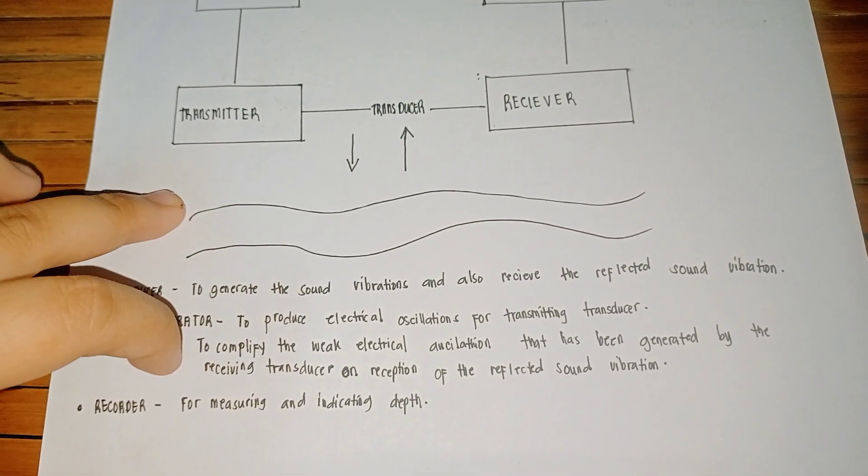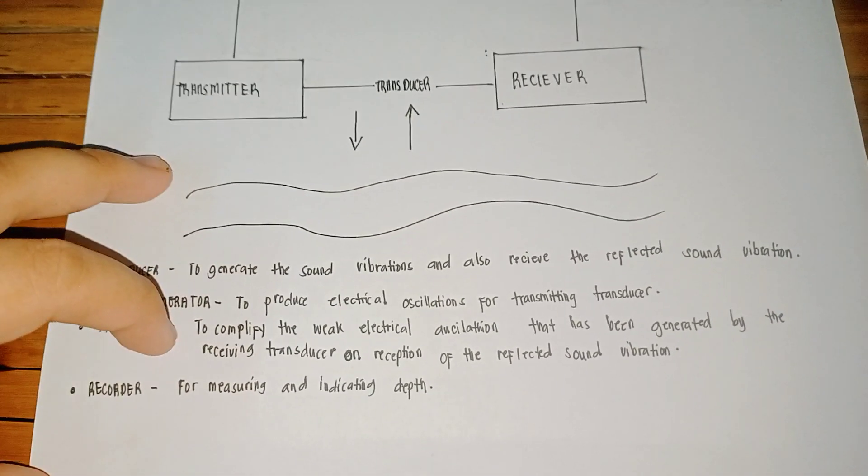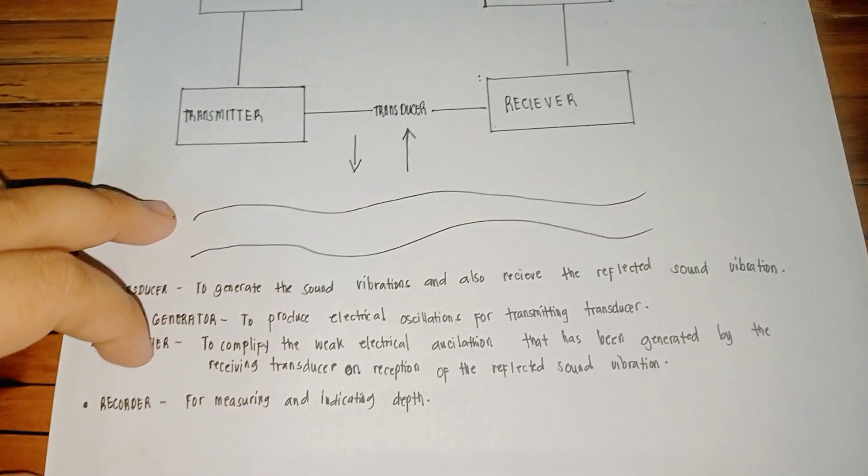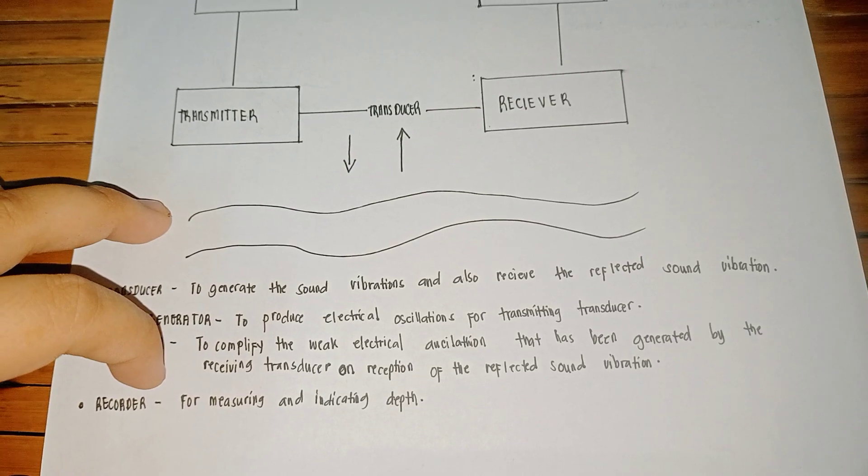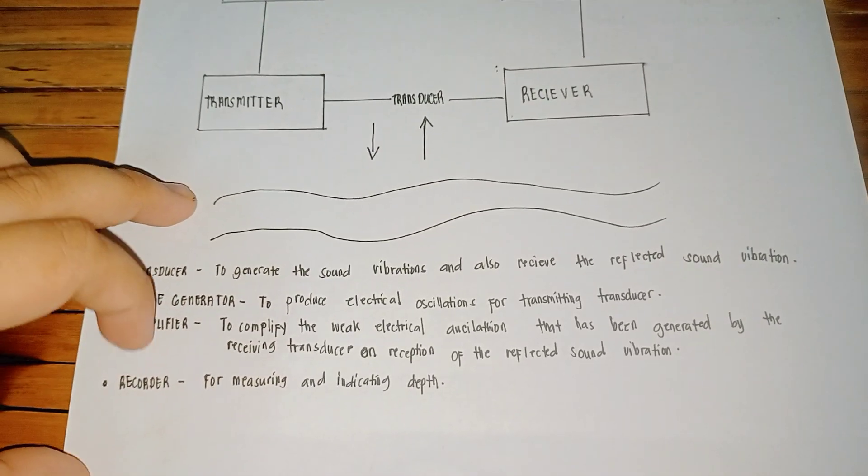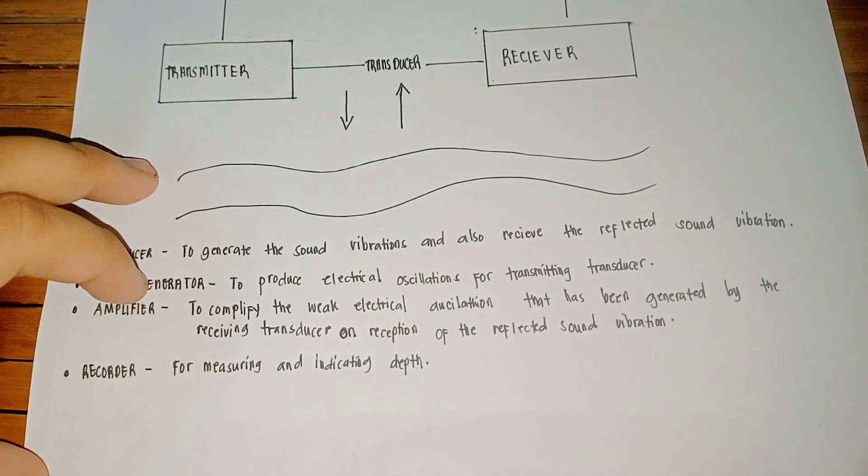The amplifier amplifies the weak electrical oscillation that has been generated by the receiving transducer upon reception of reflected sound vibration. The recorder is for measuring and indicating the depth.